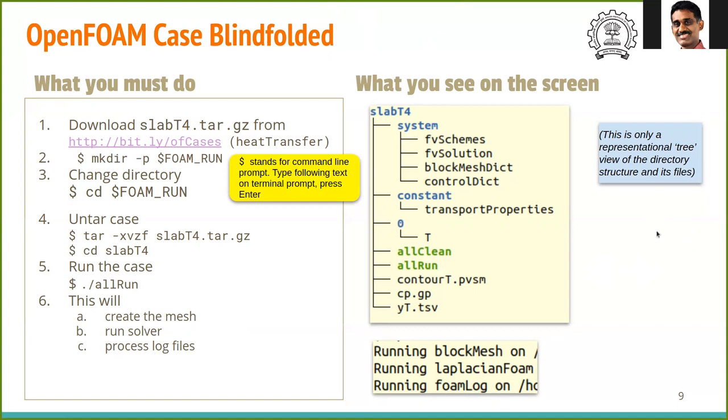I am also assuming that you have carried out the basic tutorials of OpenFOAM and ParaView, covered in the earlier lectures. For the conduction problem, visit this URL bit.ly/ofcases. From there, go to heat transfer folder and download the file called slabT4.tar.gz.